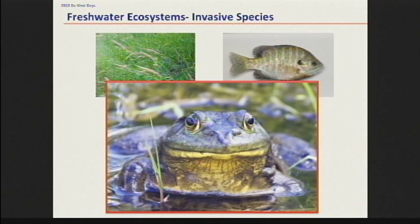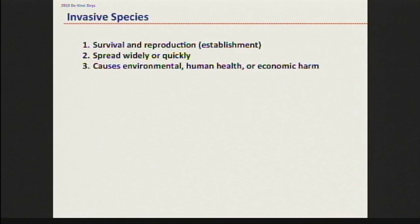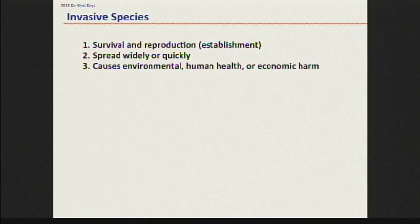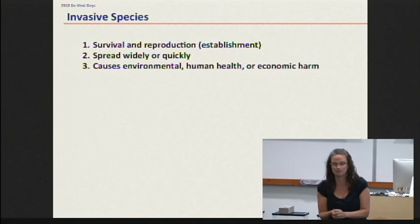First, I think it's important that we all get on the same page when it comes to invasive species, because we've got to have the same terminology if we're going to have an intelligent conversation about invasion. It's pretty tough to be considered an invasive species according to the federal government. The U.S. federal government has three contingencies in order to be classified as an invasive species.